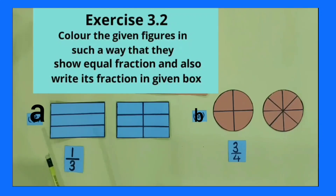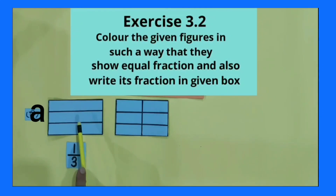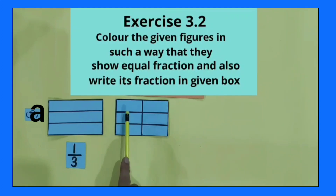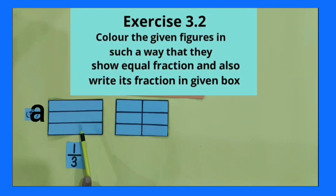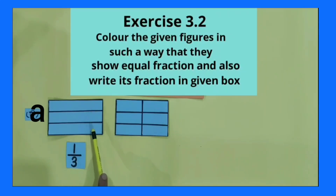So let's start part A of the sum. Two shapes are given. One shape is divided into three equal parts and its fraction is one by three. The second shape is divided into six equal parts, and we have to color these two shapes so that their fractions become equivalent to each other. Let's start with the first shape — it is divided into three equal parts, so three is our denominator and one part is to be colored.